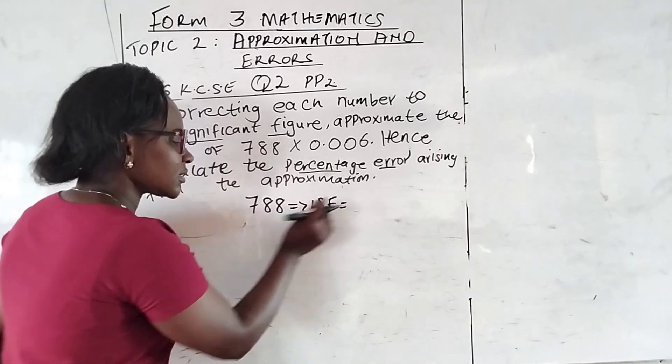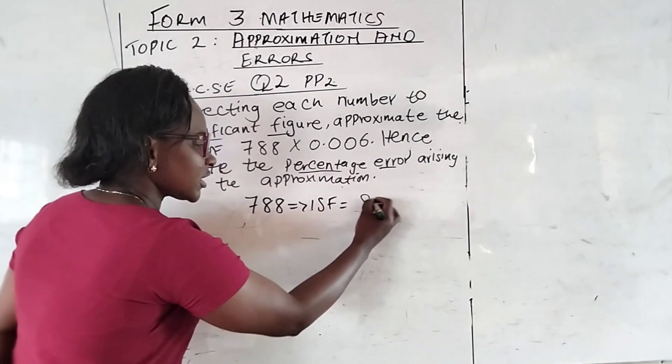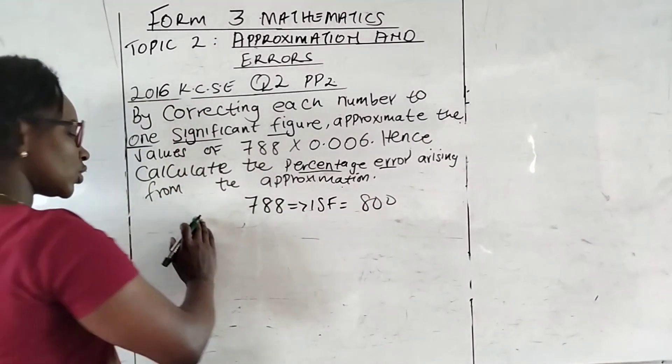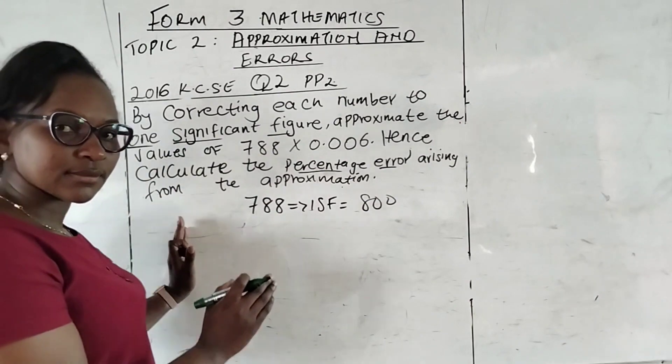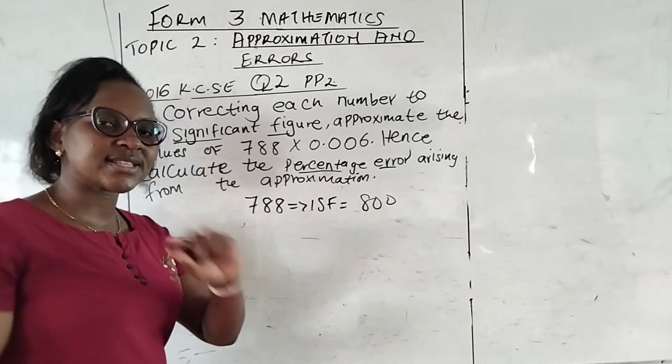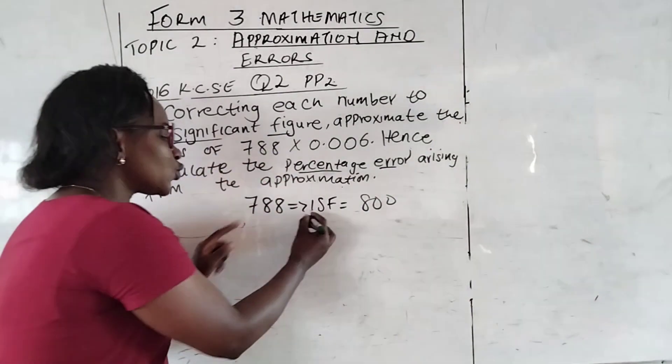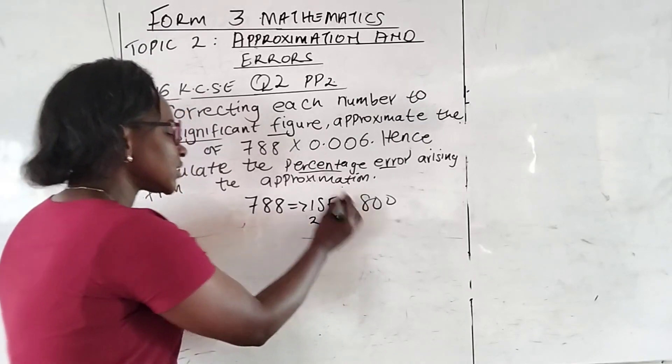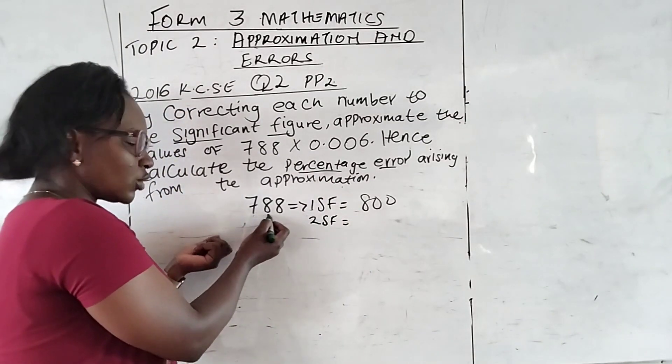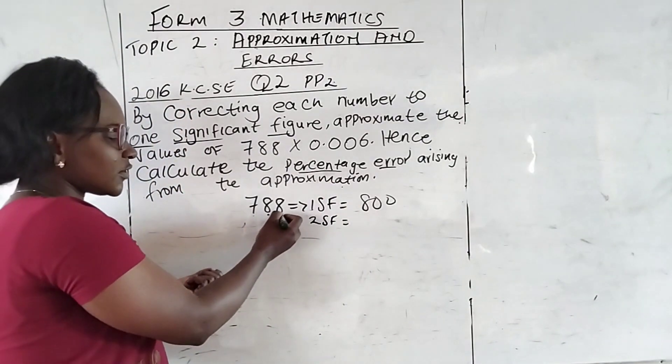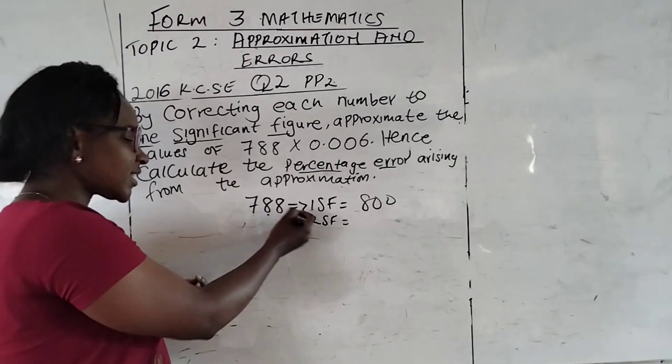This is going to be 800. We look at the first version on our left hand side. We are looking at the significant figures. If it was two significant figures, we would look at 1, 2. Then I will look at that value. Is it 5 or more than 5 or less than 5?